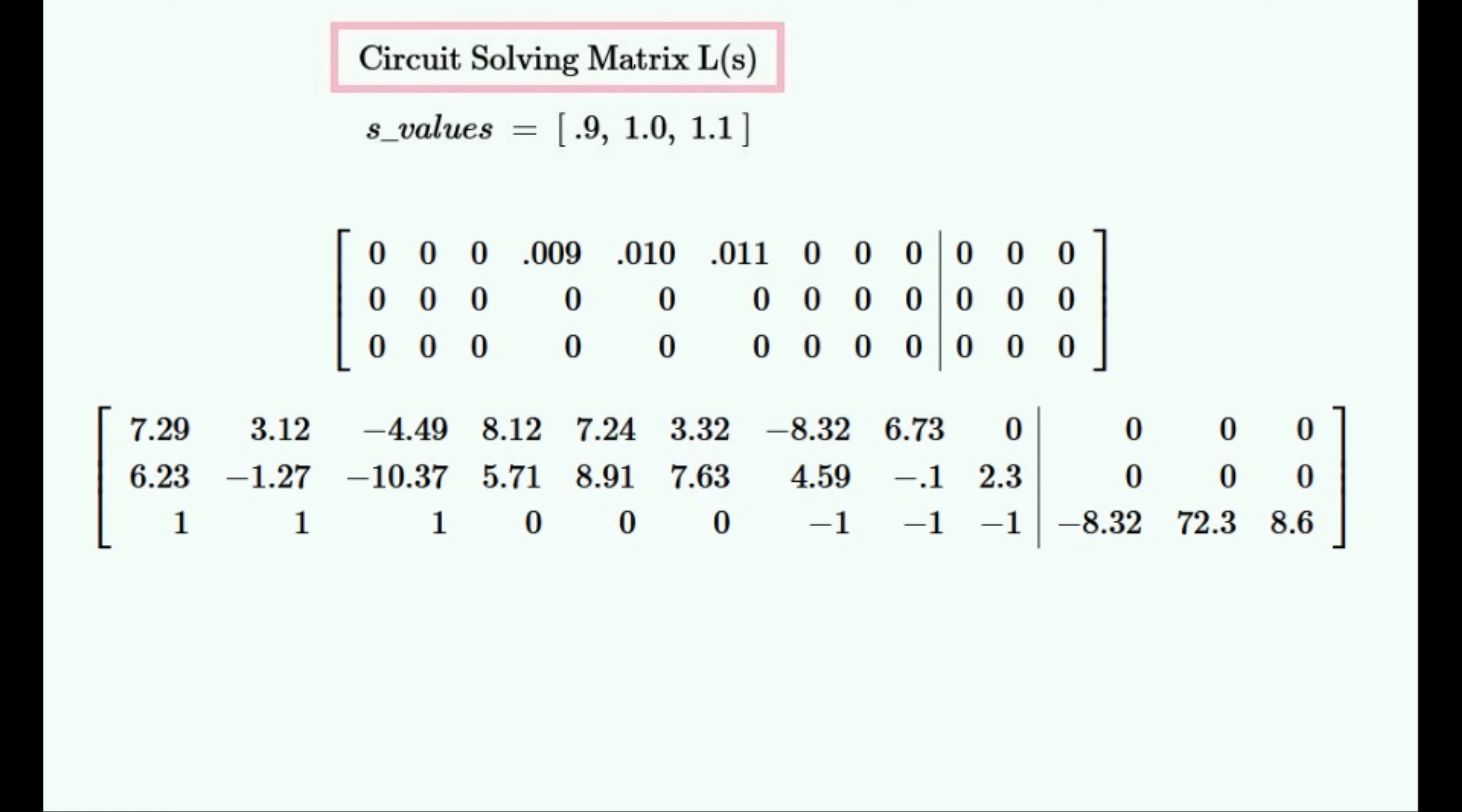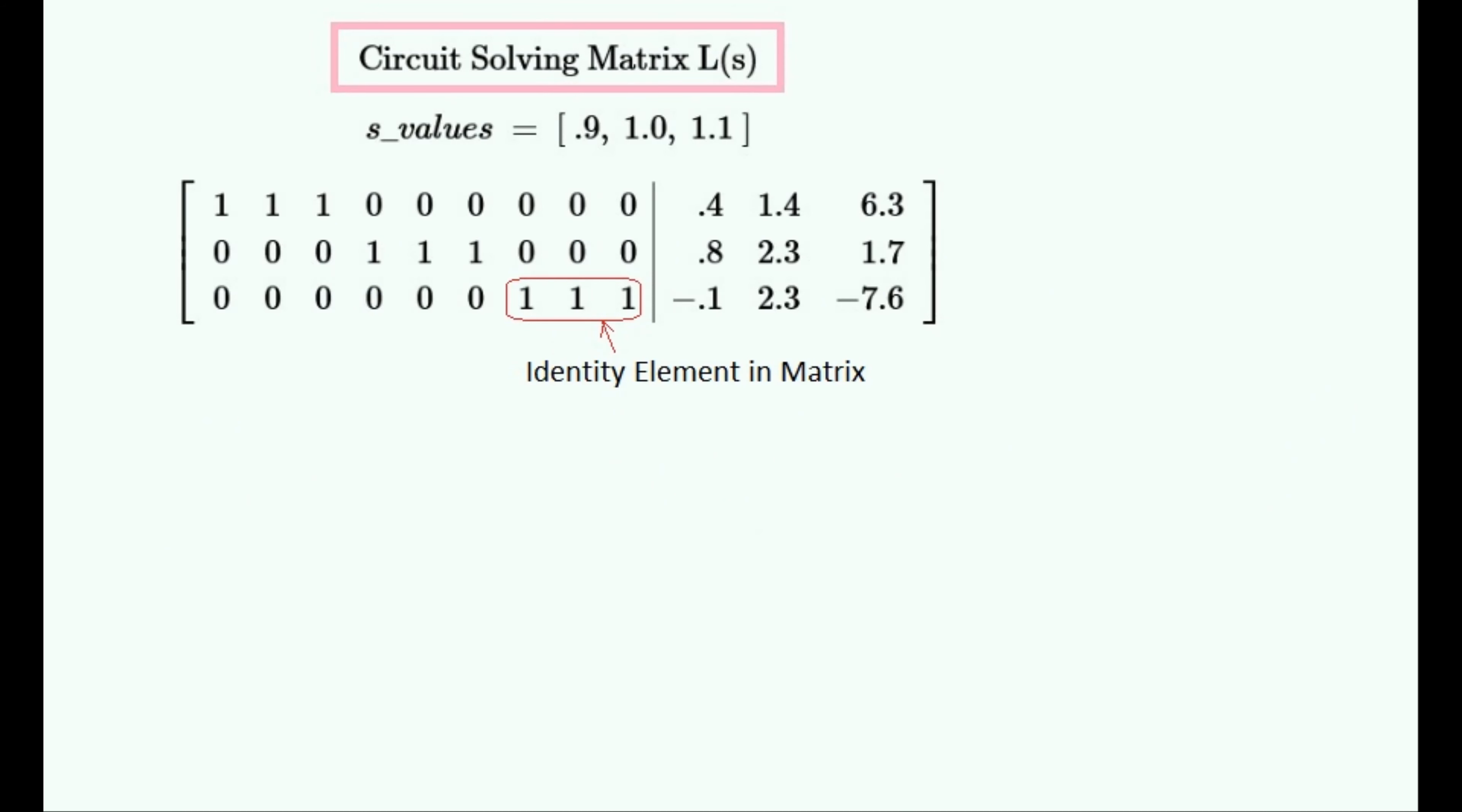Notice that the voltage source would have a value in the voltage column and ones, zeros and minus ones in the rest of the row. This corresponds to how a voltage source would look in a circuit matrix.